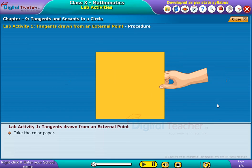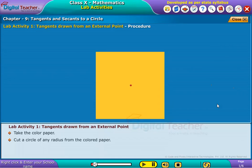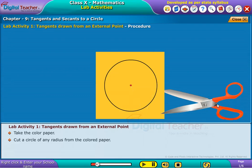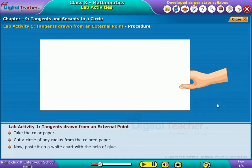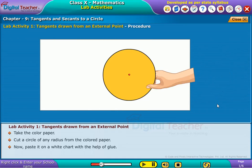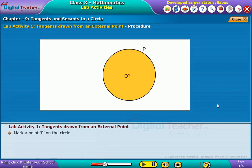Take the color paper. Cut a circle of any radius from the colored paper. Now, paste it on a white chart with the help of glue. Let O be the center of the circle. Mark a point P on the circle.